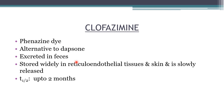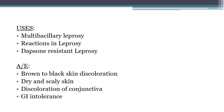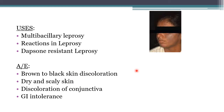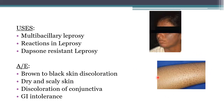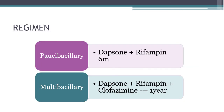Clofazimine is a phenazine dye. It is excreted in feces, stored widely in reticuloendothelial tissues and skin, slowly released, and has a very long half-life of up to two months. It is used in treatment of multibacillary leprosy (with rifampin and dapsone), for treatment of leprosy reactions (reversal reaction and ENL), and for dapsone-resistant leprosy along with other antibiotics such as fluoroquinolones, macrolides, and minocycline. Adverse effects include brown-to-black skin discoloration, dry and scaly skin (ichthyosis), discoloration of conjunctiva, and GI intolerance — all reversible.